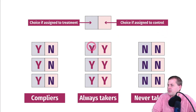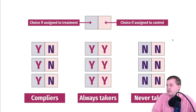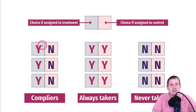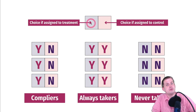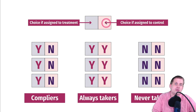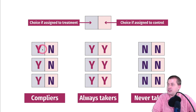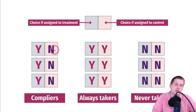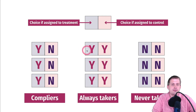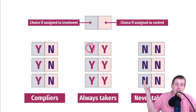Every person has potential outcomes for their compliance. Each person has a left box — what they would do if assigned to treatment — and a right box — what they would do if assigned to control. A complier assigned to treatment does it; assigned to control, they won't. Always takers will always do the treatment regardless of what they're assigned.